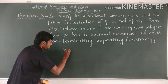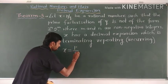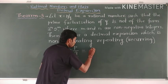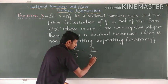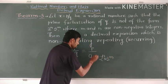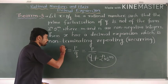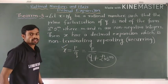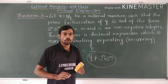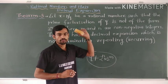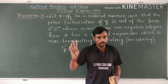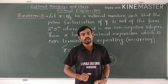To summarize: x is a rational number expressed as P by Q. If Q is not of the form 2 to the power n into 5 to the power m, then the decimal expansion of x is non-terminating and repeating (recurring). I hope you understood Theorem 3. In the next class, we will discuss some examples based on Theorem 1, Theorem 2, and Theorem 3. Till then, take care. Jai.